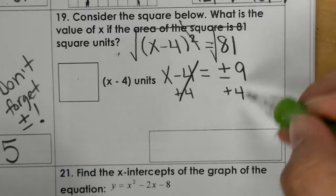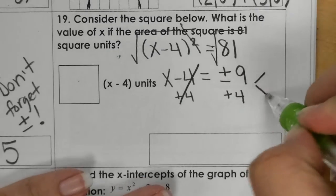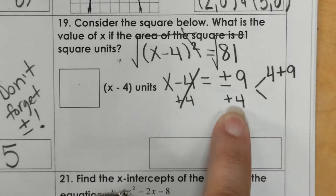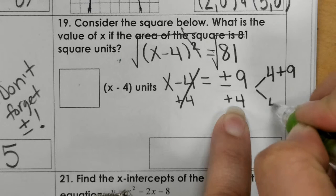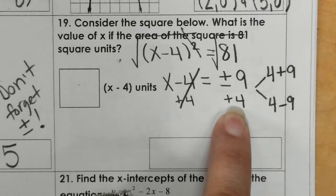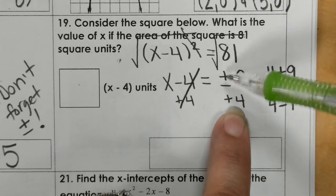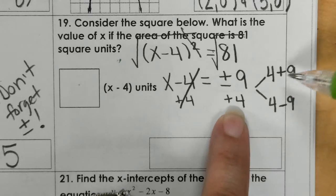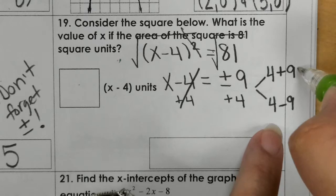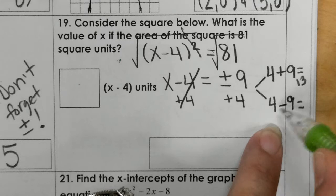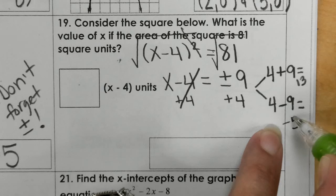What does this look like? You would go positive 4 plus 9 and positive 4 minus 9. You're only changing the 9 because it's a plus or minus in front of the 9, not the 4. So 9 and 4 make 13, and 4 minus 9 make negative 5.